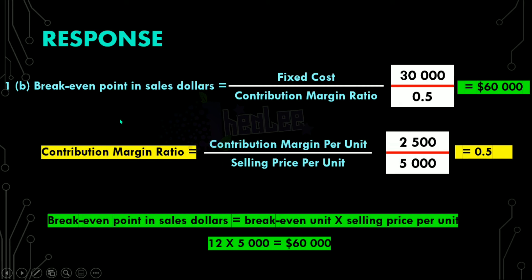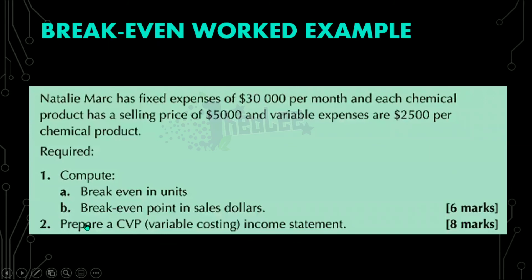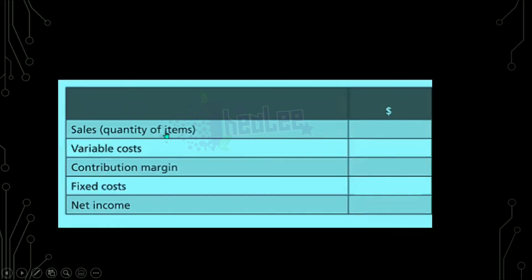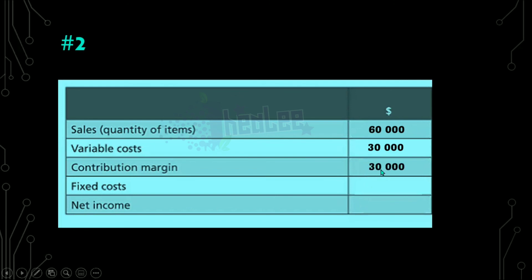Let us now look at number two from the question, and that is to prepare a CVP income statement. To prepare that, we are going to pick up our sales for the period. To get your sales, it is your break-even units multiplied by the selling price, which gives us $60,000. The variable cost — the variable cost per item is $2,500, so we multiply $2,500 by the break-even units, which gives us our variable cost of $30,000. We then subtract this variable cost from our sales to give us contribution margin, which is $30,000.